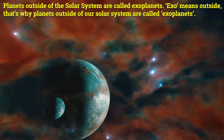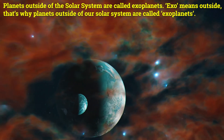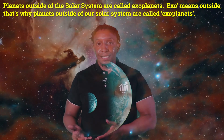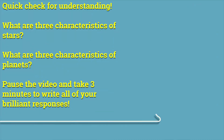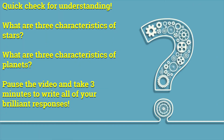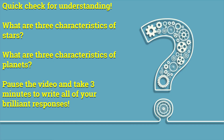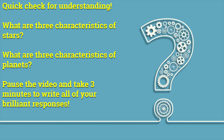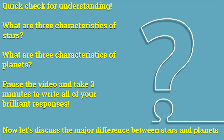Planets outside of the solar system are called exoplanets — "exo" means outside. Quick check for understanding: what are three characteristics of stars, and what are three characteristics of planets? Pause the video and take three minutes to write all your brilliant responses.